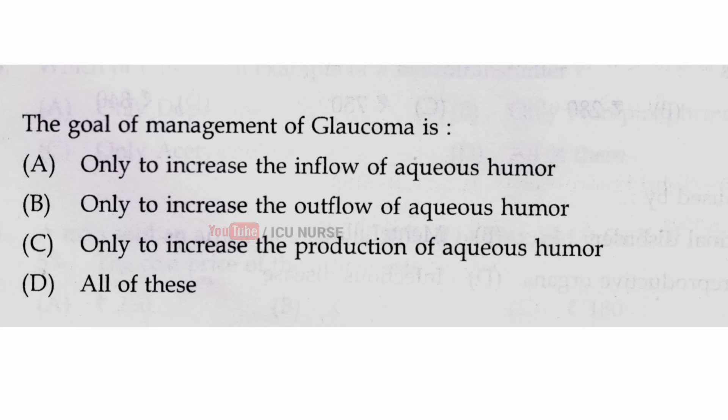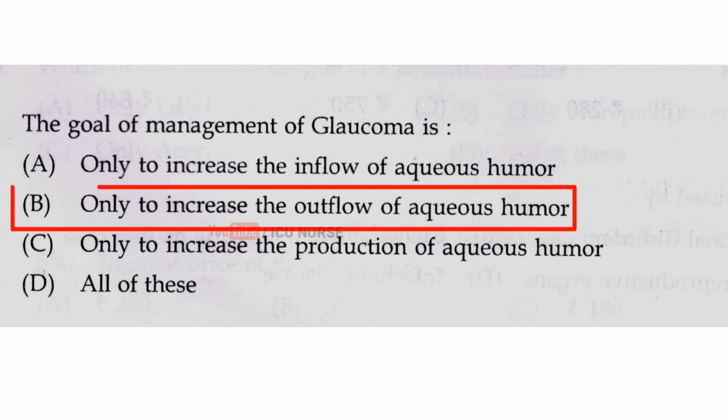The goal of management of glaucoma is — the correct answer is B — to increase the outflow of aqueous humor. Increasing the outflow of aqueous humor decreases the intraocular pressure.